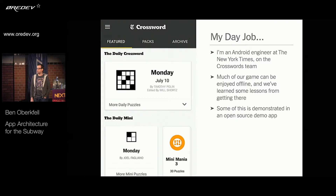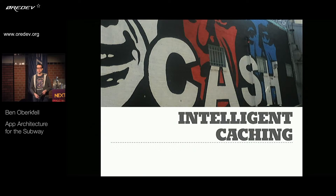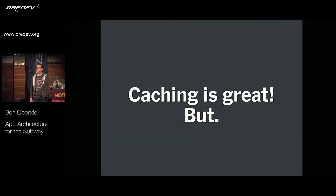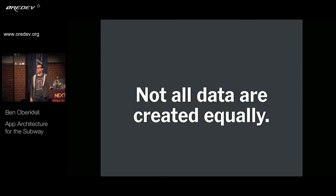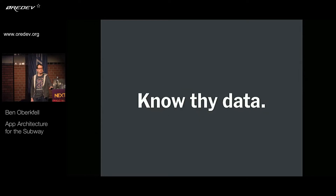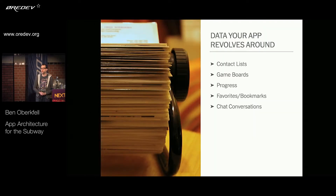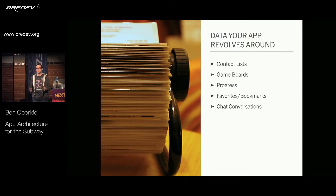Much of working offline involves using intelligent caching. Caching is great, but not all of your data are created equally, so it's important to know your data. There's data that your app revolves around — things like contact lists, game boards, your progress through a game, favorites and bookmarks — these things are all core to your business logic and are very important to persist and keep around.